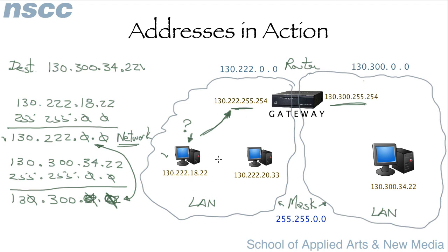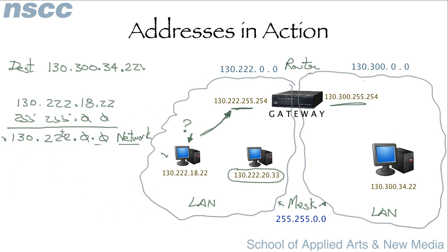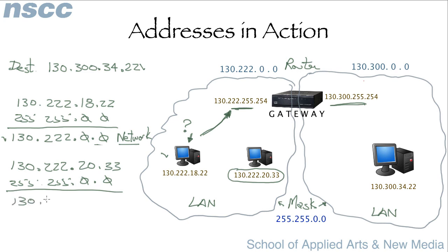If, however, the machine is sending a packet to 130.222.20.33, it applies the network mask to that destination address and gets the same network it's on. Since they match, it uses a local delivery mechanism to send the packet directly through the local LAN to that machine.